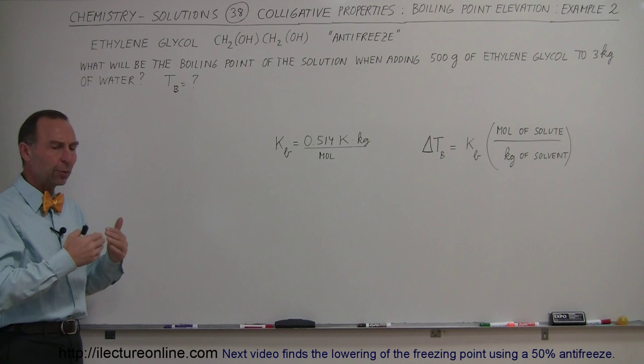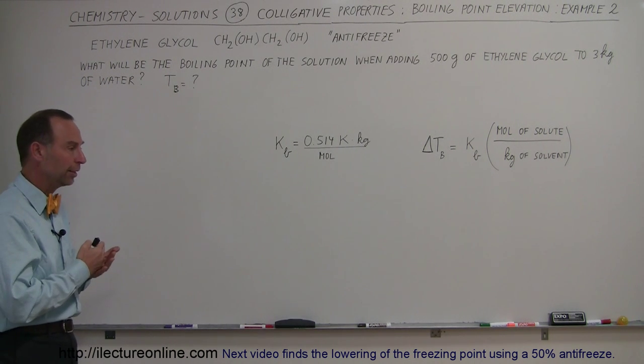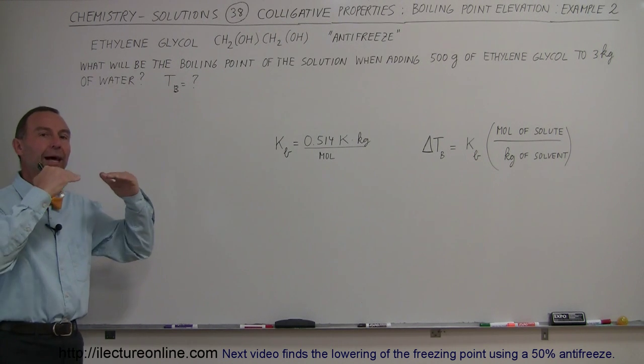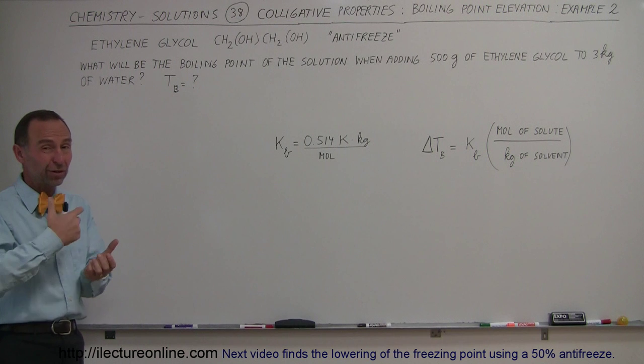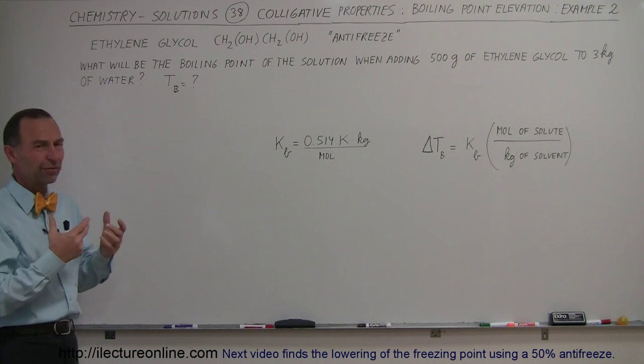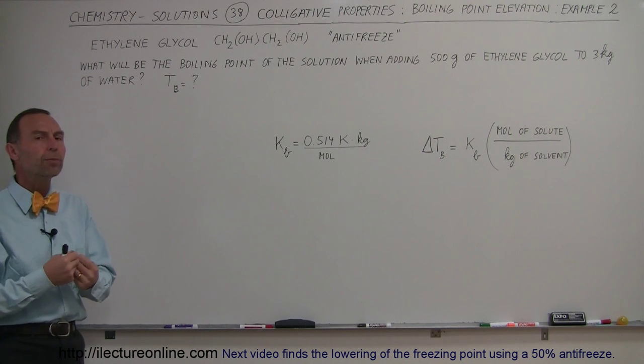When the water in the radiator gets really hot, or I should say the solution because it's no longer pure water, we'd like to have the boiling point a little higher. That way it's less likely to begin to boil, and because once it boils, it builds up pressure, and it's a very dangerous situation. So how high will the new boiling point be?